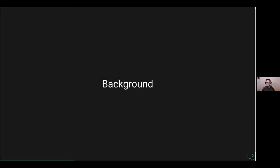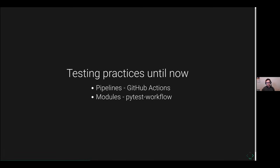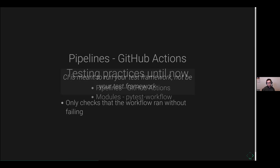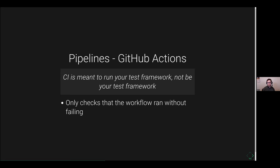A little bit of background as to why we want this. So far, our testing practices until now have been testing our pipelines with GitHub Actions, and then testing our modules with PyTest Workflow running on GitHub Actions. I was talking to Satish as we were starting to play around with NF-Test that CI is meant to run your test framework and not be your test framework. Really all it's doing is checking the workflow ran without failing — which is a huge step up from nothing, but it starts to create several problems.